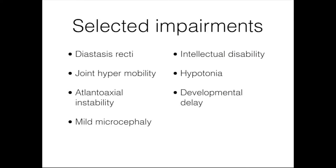Common impairments in Down syndrome include diastasis recti and joint hypermobility — these children have very lax, loose joints and can perform movements that look almost unnatural due to their flexibility. Atlantoaxial instability is seen in about 12% of children with Down syndrome. X-rays are usually done by age two to determine its presence. If absent, the child can participate in all activities without restriction. If present, activities like somersaults or anything where the child is on their head must be avoided due to the risk of joint subluxation and significant injury. Prior to x-ray, we should assume atlantoaxial instability is present.